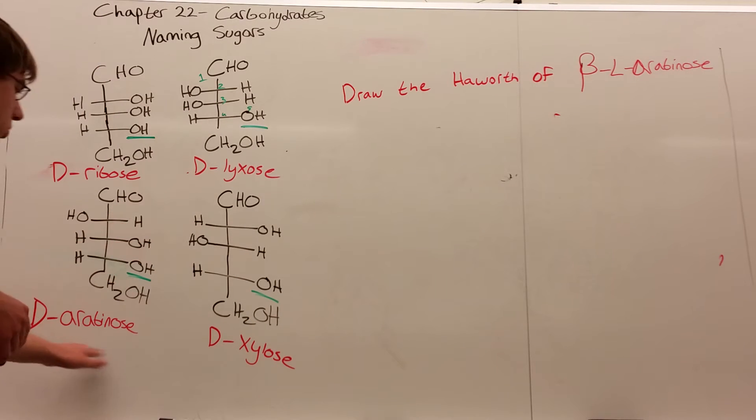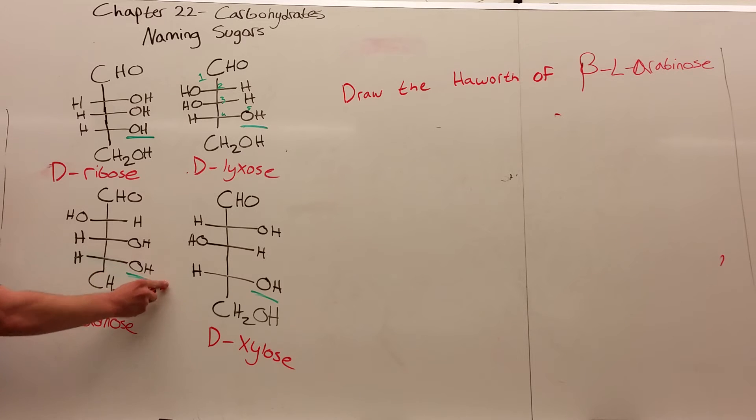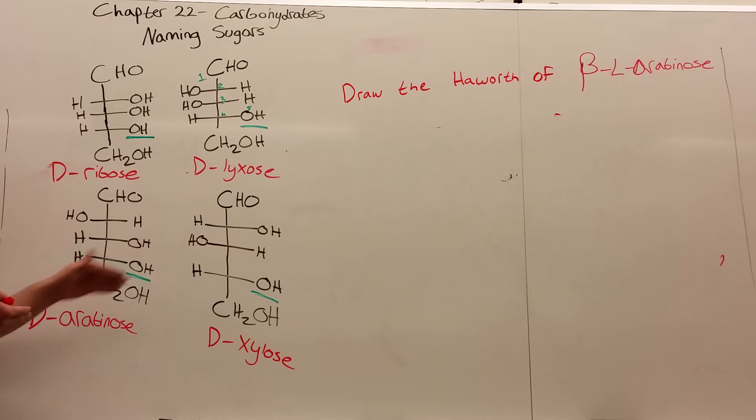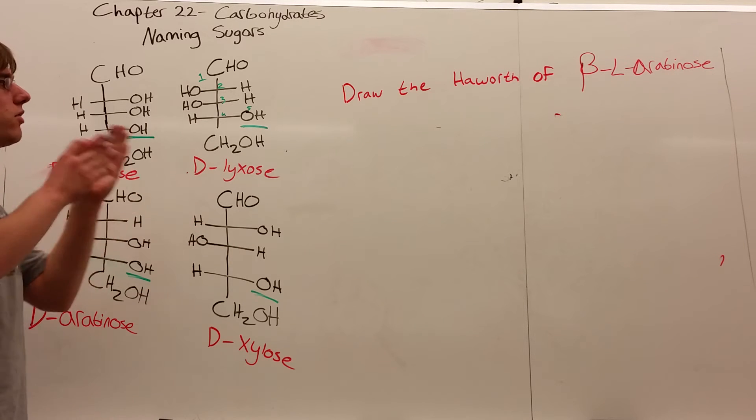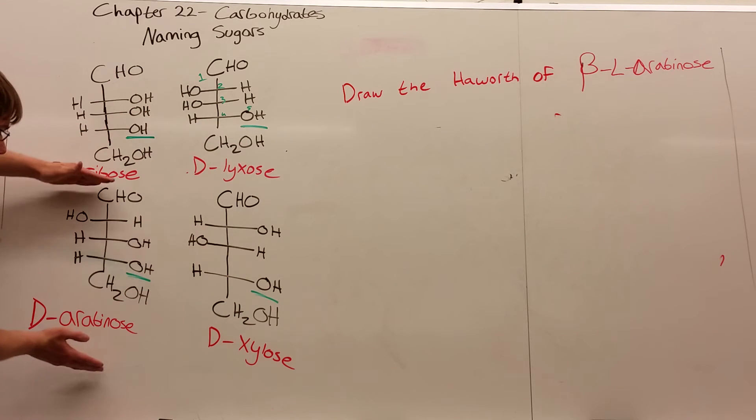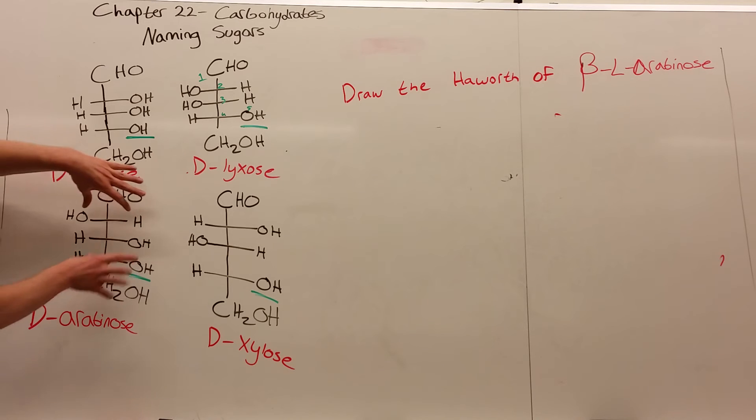Because we only give you D-sugars, you have to remember something for L-sugars. An L-sugar is where the penultimate OH is on the left. None of these have that OH in that position, which means we have to consider what this would look like if every OH flipped positions. An L-sugar is essentially the enantiomer, the mirror image of a D-sugar. To get L-arabinose from D-arabinose, take the sugar and redraw it with each OH group flipped to the other side.